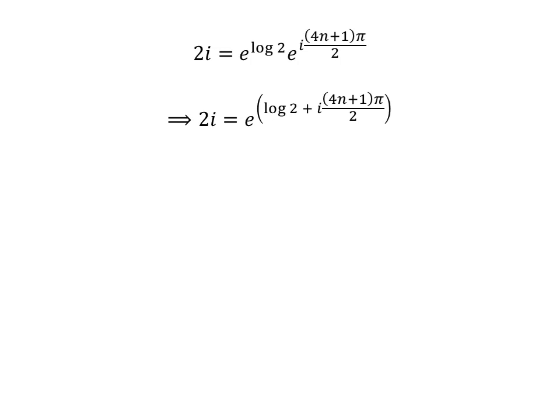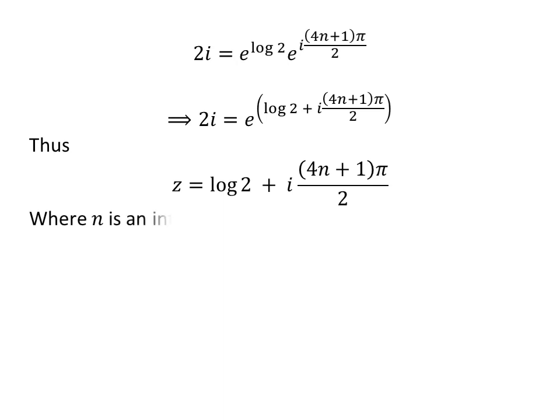So, 2 times iota is equal to exponential of natural log of 2 plus iota times (4n plus 1) times pi upon 2. Thus, Z is equal to natural log of 2 plus iota times (4n plus 1) times pi upon 2, where n is an integer.